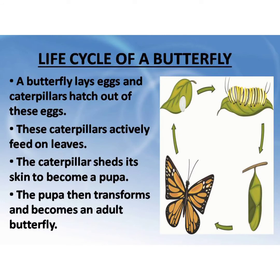Life cycle of a butterfly: A butterfly lays eggs and caterpillars hatch out of these eggs. These caterpillars actively feed on leaves. The caterpillar sheds its skin to become a pupa. This process of shedding skin is called molting. The pupa then transforms and becomes an adult butterfly. The series of changes which the pupa undergoes to become an adult butterfly is called metamorphosis.